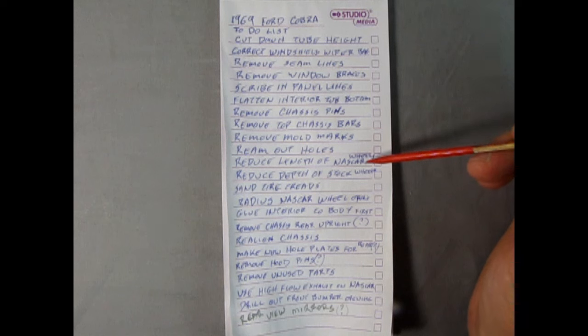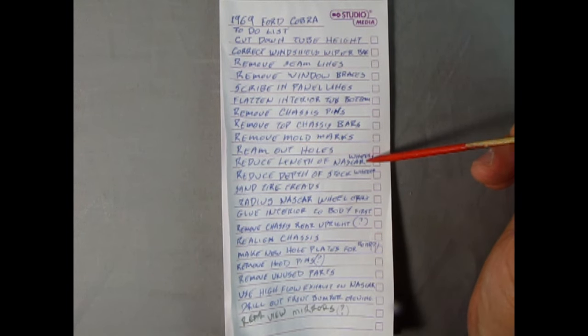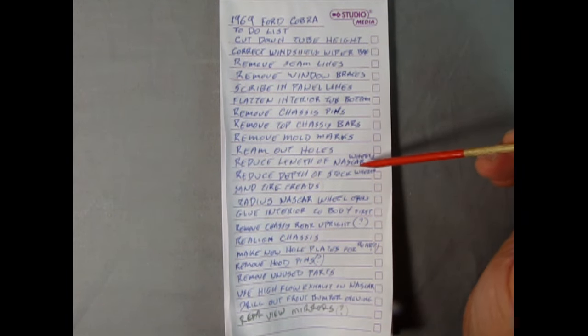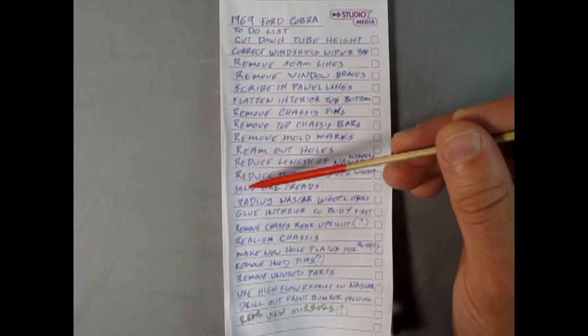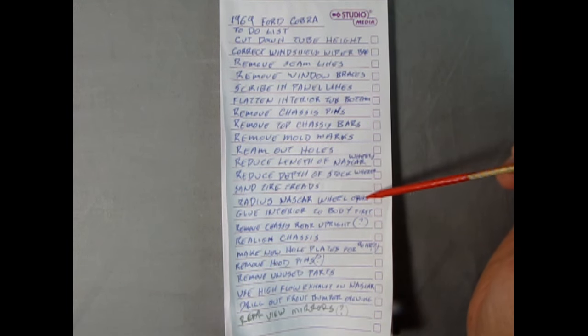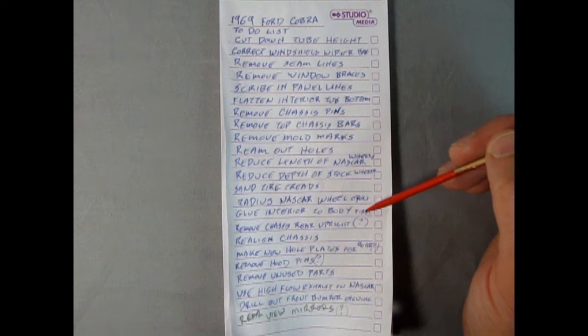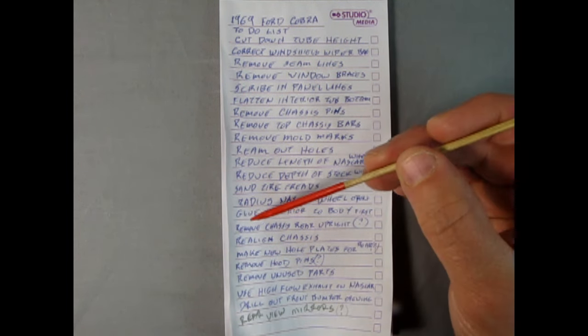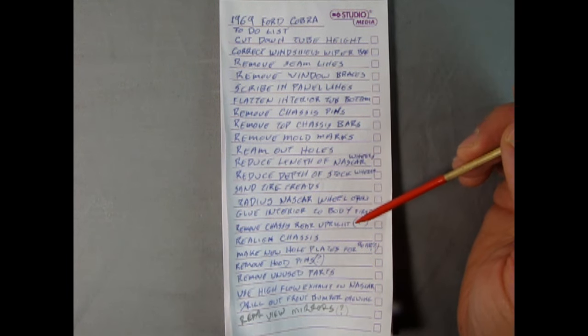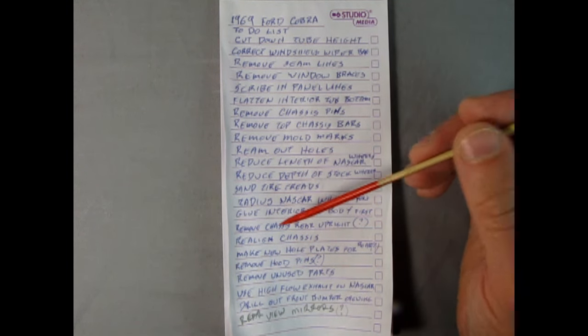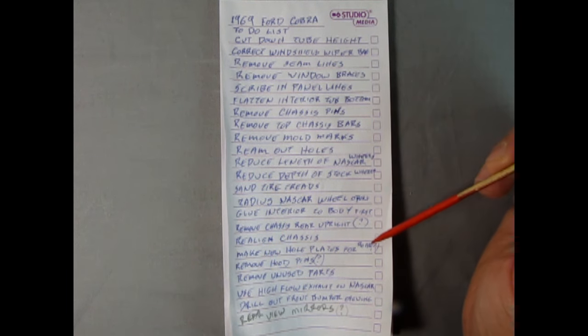Remove the top chassis bars. That was what Trekworks had recommended. Remove mold marks, that's going to be everywhere. Ream out holes for any of the holes involved with the wheels, just to make sure that everything's going to roll nicely underneath there. Reduce the length of the NASCAR wheels. Because they're not really NASCAR wheels on here, they are the modified track race car wheels that are going to stick out of the car. We want to bring those back in under the fenders. Reduce the depth of the stock wheels to get that height down so that they actually fit in the tires properly. Sand the tire treads. Radius the NASCAR wheel opening up in the front.